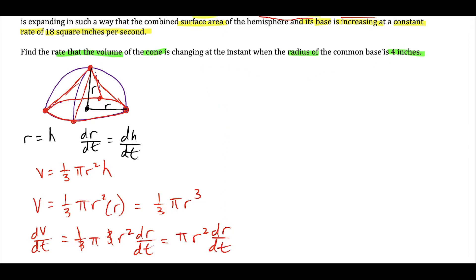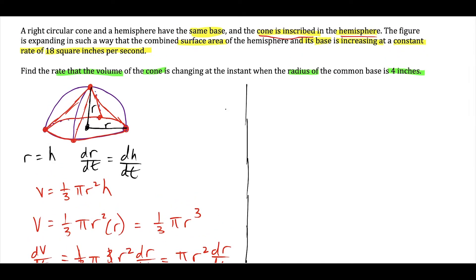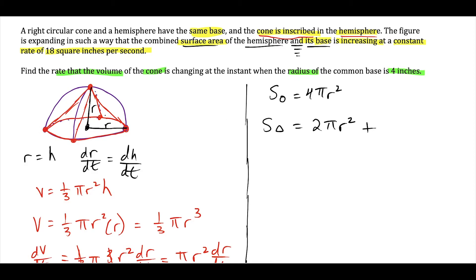We need to find dr/dt, so we go on a side quest using the surface area information. The surface area of a full sphere is 4π r². The surface area of just the curved part of a hemisphere is 2π r², but the problem says the combined surface area of the hemisphere and its base. Since the base is a circle with area π r², the total formula becomes 2π r² + π r² = 3π r².